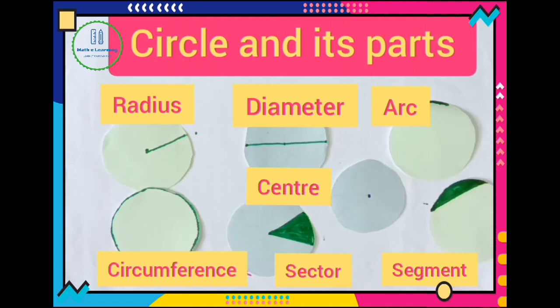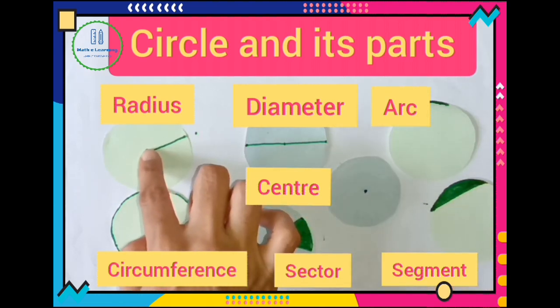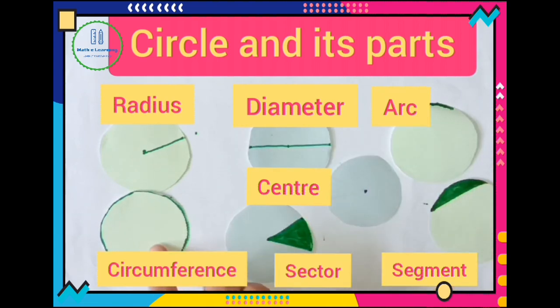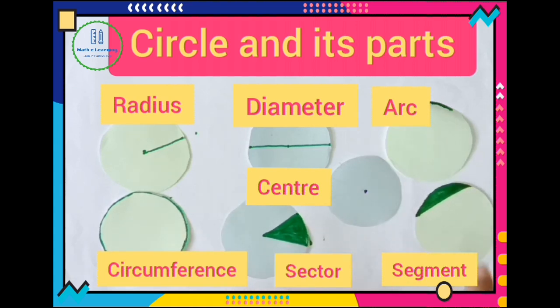Now you know about all these parts very well. We revise it: this is circle, this is circle and its center, then radius, diameter, arc, circumference, sector and segment. I hope you understand all these parts of circle. And if you like this activity then click on like button, share with your friends and subscribe my channel. Thank you.